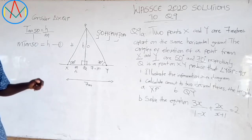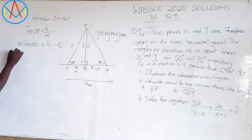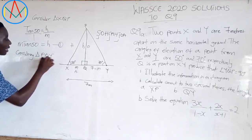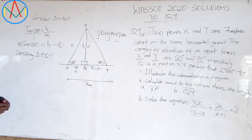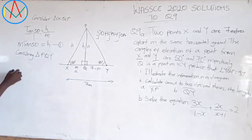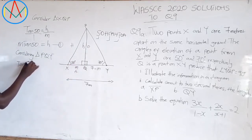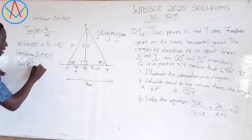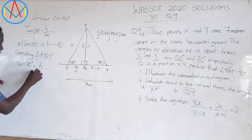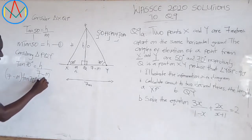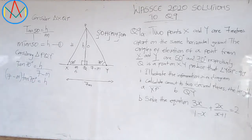Now let's consider triangle PKY. We are also given adjacent and opposite, so we also use tangent. Tan(70°) = H/(7 - M). So doing cross multiplication, we get (7 - M)·tan(70°) = H. This becomes equation 2.